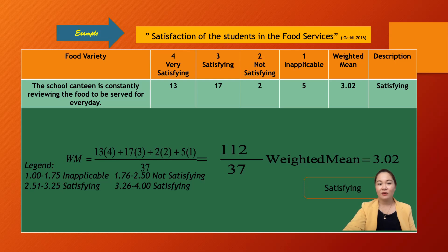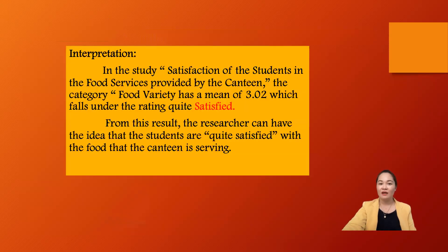For the legend with 4 corresponding rates, the interval formula is (n − 1) / n, so (4 − 1) / 4 = 0.75. The ranges are: 1.00–1.75 = Inapplicable, 1.76–2.50 = Not Satisfying, 2.51–3.25 = Satisfying, and 3.26–4.00 = Very Satisfying. Since the weighted mean is 3.02, it falls in the range 2.51–3.25, so the description is Satisfying.